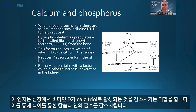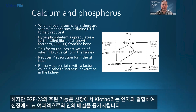By doing that, it reduces the absorption of calcium and phosphorus from the diet. But the primary function of FGF-23 is that it is a hormone that binds with a factor called clotho in the kidneys and stimulates the secretion of phosphorus from the kidneys into the urinary filtrate.